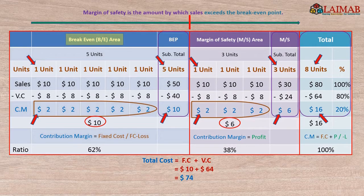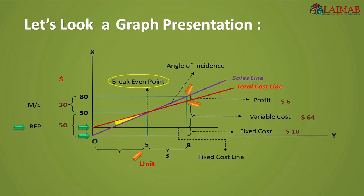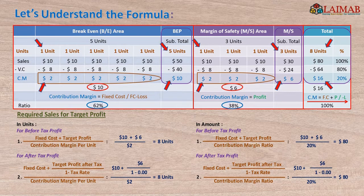At the breakeven point area, contribution margin equals total fixed cost. In case of loss, that is minus loss. The yellow area indicates losses at the breakeven point area and the green area indicates profits. If we want to achieve profit, then we have to recover fixed cost at first by contribution margin.